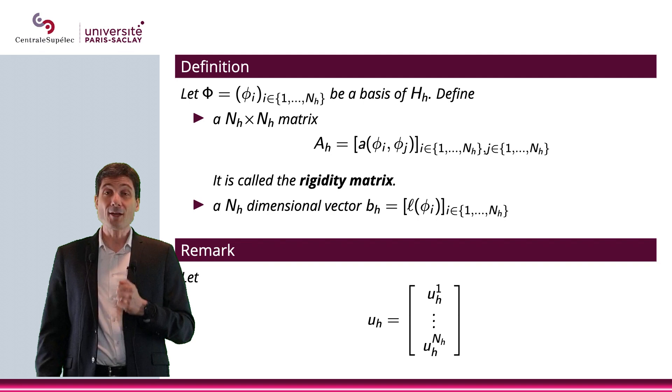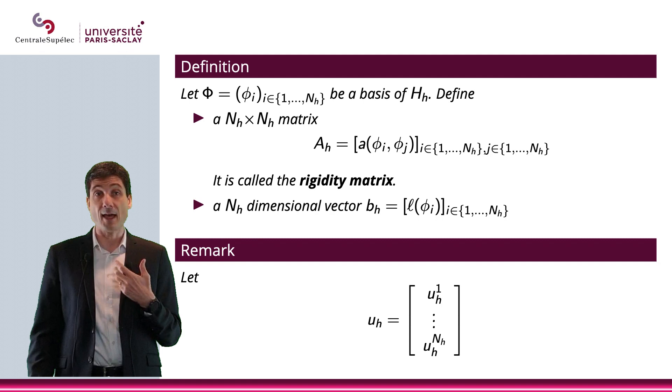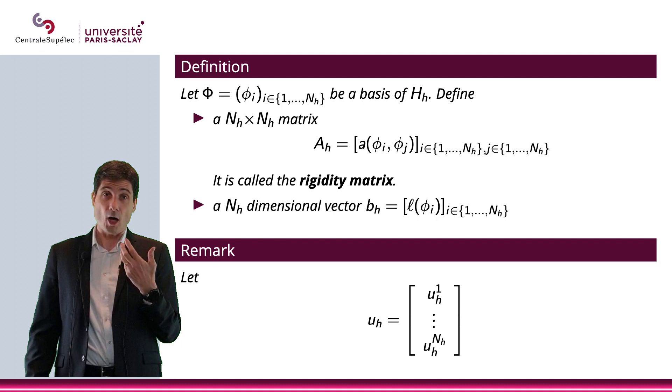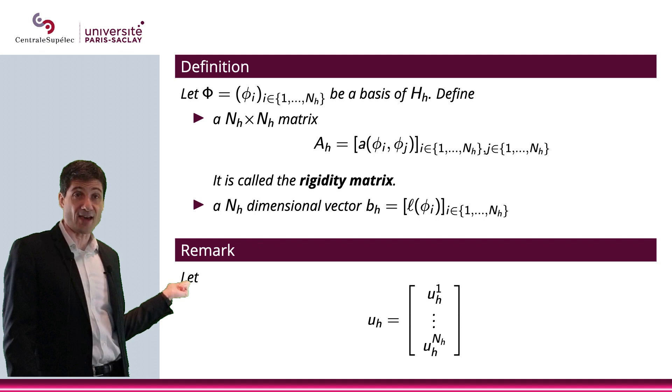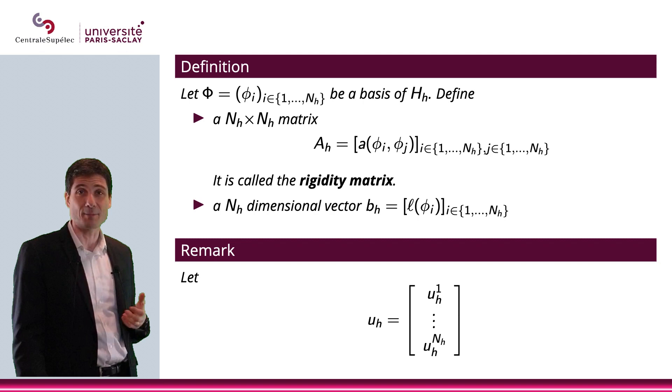Let me make another remark. uₕ, which is obviously the solution to my variational problem (VFₕ), is the element, is something that I'm looking for, it's an unknown, but it is an unknown in a linear space of finite dimensions. So, looking for uₕ is really the same as looking for its components on the basis, φᵢ. So, instead of looking for the vector uₕ, I can look for the numbers uₕ¹ to uₕᴺʰ. I just use a superscript here because it's a little crowded, so basically I'm looking for these numbers, for these Nₕ numbers.